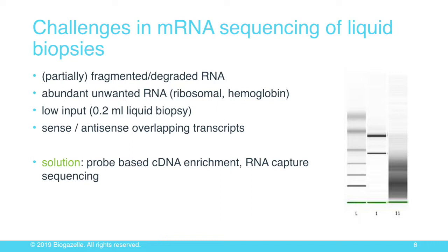The challenges in messenger RNA sequencing of liquids are numerous. It's not too difficult to sequence small microRNAs, but long messenger RNAs are, to some extent, degraded or fragmented in the liquid biopsy. We have a lot of unwanted RNA such as hemoglobin or ribosomal RNA. Input is typically low — samples of around 200 microliters — though RNA concentration is at least 10 times higher than DNA, offering some sensitivity advantage. Additionally, the genome is pervasively transcribed with sense and antisense overlapping transcripts, so we need library prep methods that handle all these challenges.